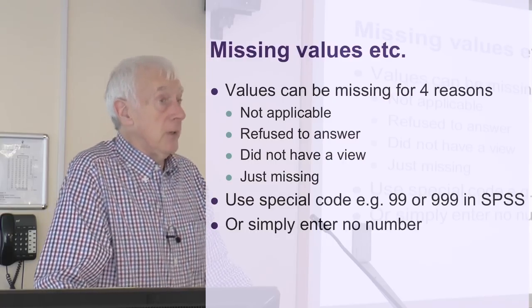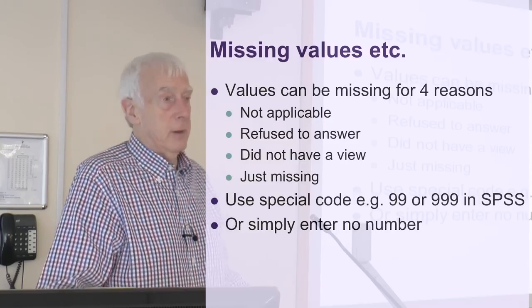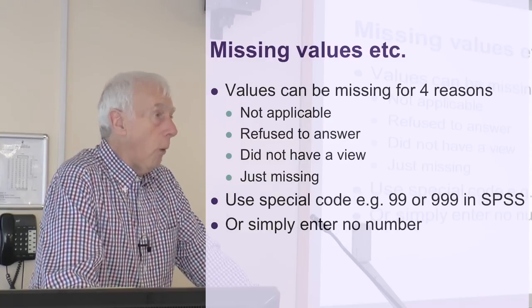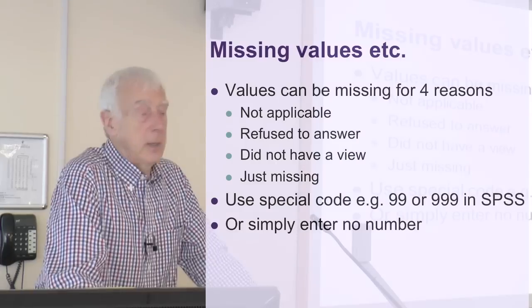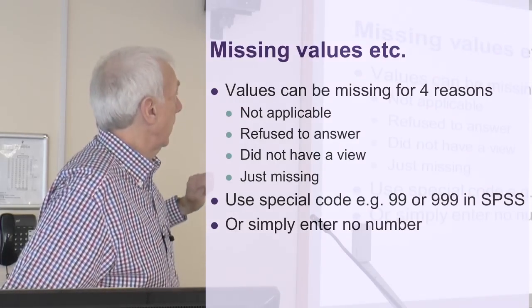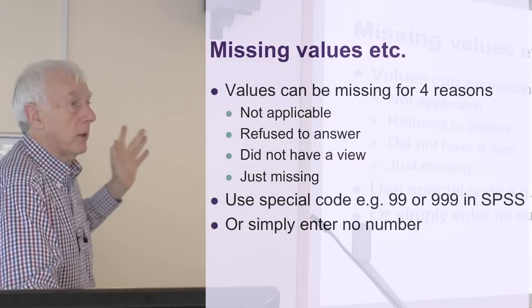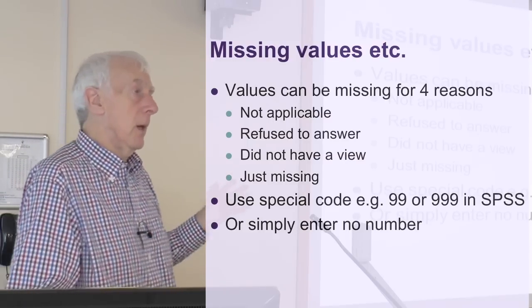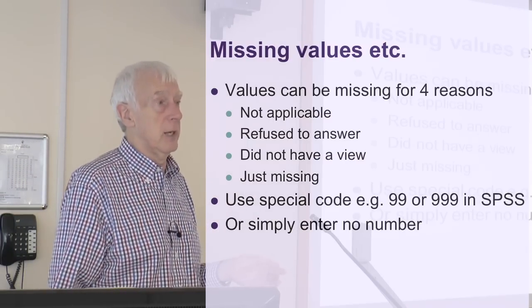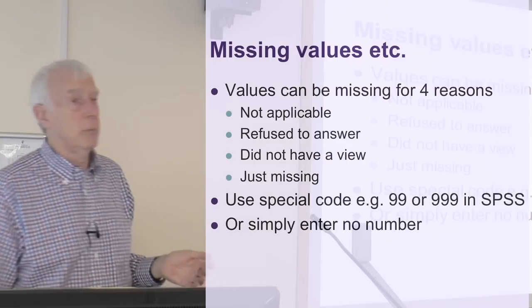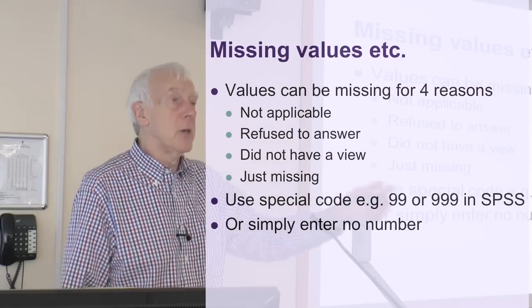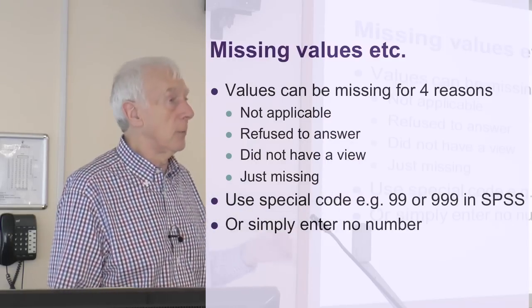The first thing that comes up is missing values — if there are things on the questionnaire that aren't there, why are they not there? The kinds of reasons it happens — I've given you four possibilities here. First of all, because it's not applicable to that person. Maybe you've got a filter question on your questionnaire — a question that filters out people and tells them to jump over the next few questions because they don't apply to them.